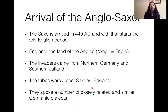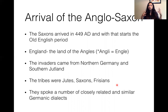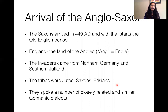The invaders came from northern Germany as well as southern Jutland. The tribes were the Jutes, the Saxons, and the Frisians, as well as the Anglo-Saxons, the Picts, and the Scots. So many Germanic tribes invaded England in 449 AD — this really marks the arrival of English and the start of the Old English era.